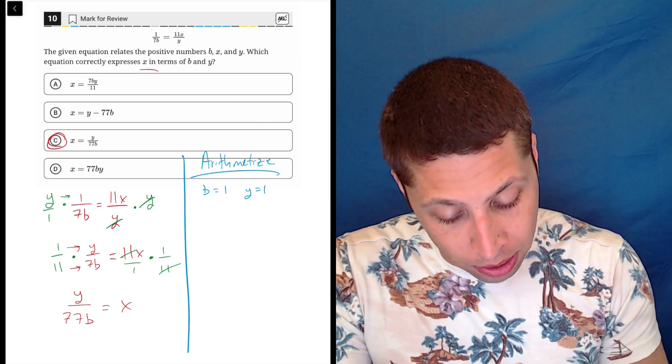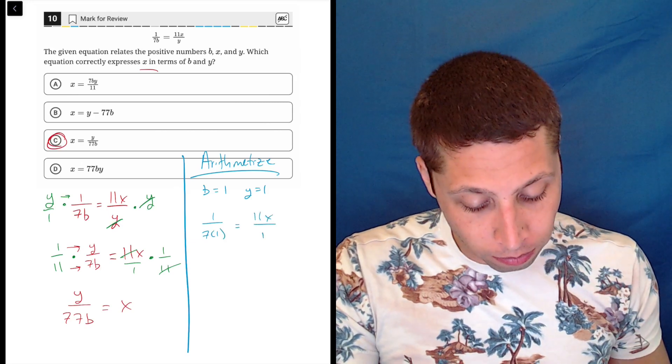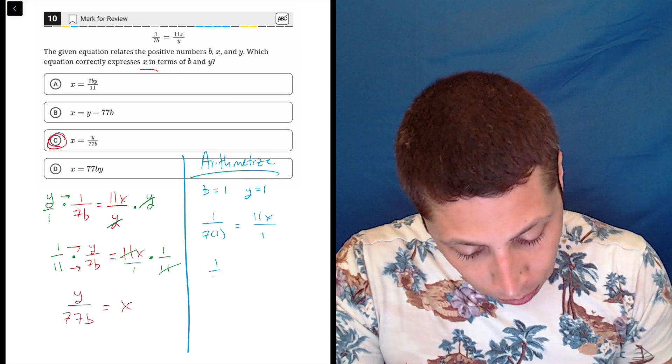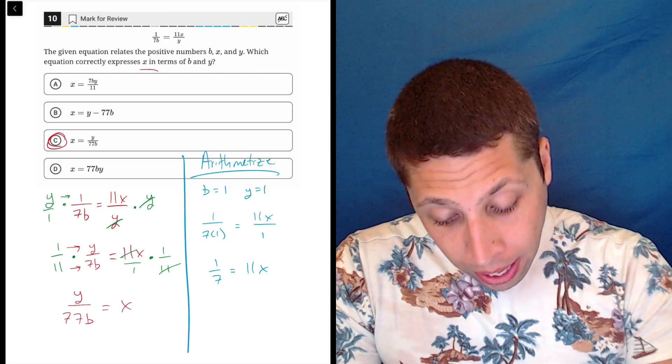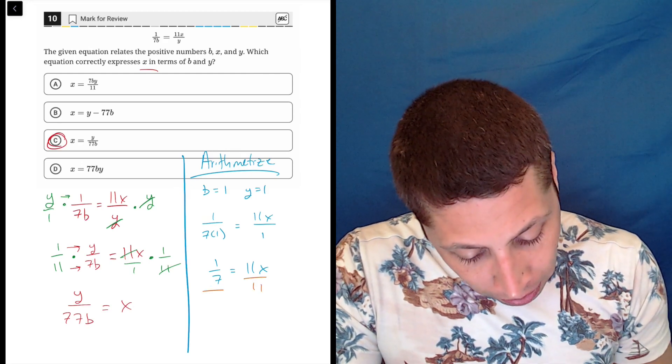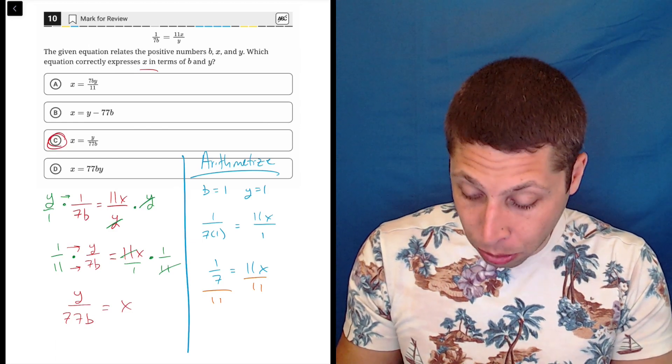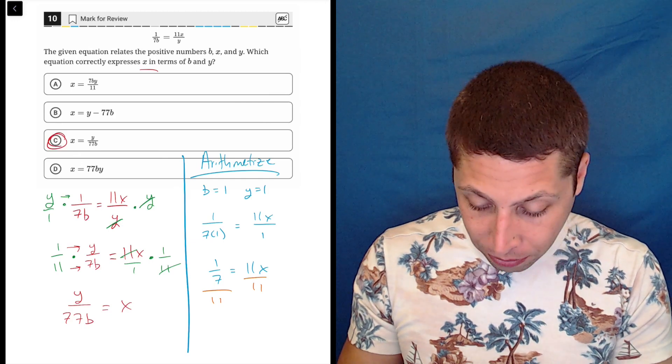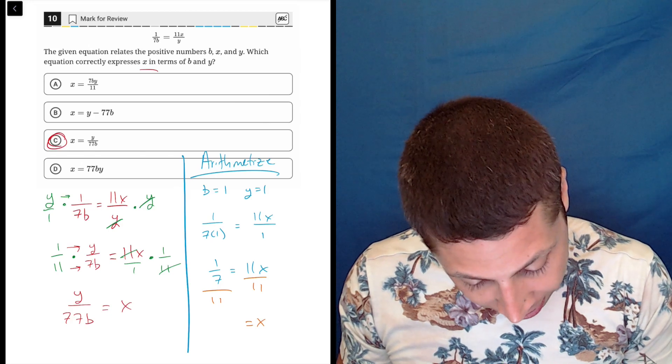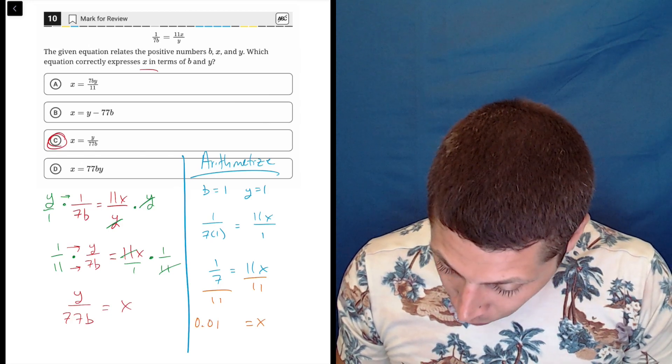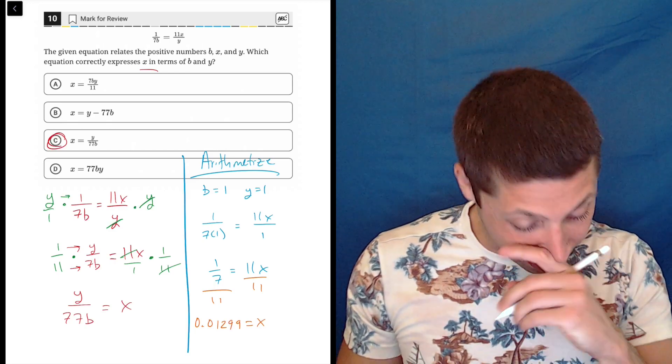But if I make B equal to one and Y equal to one, then my equation becomes this. One over seven times one is equal to 11X over one. And kind of cleaning that up a bit, we would get one-seventh is equal to 11X. And we do have a calculator, so this isn't so bad, right? We can divide both sides by 11. So now that we have numbers, we can divide. One-seventh divided by 11 is gonna be a very messy number, but it gets me that X is equal to 0.01299. Let's leave it there, I'm running out of space.